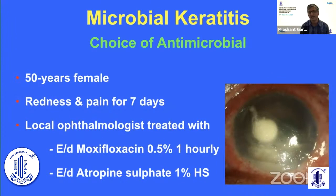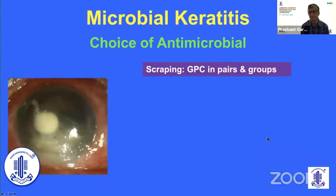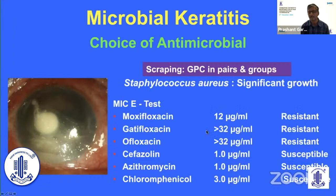Let me show you a third patient — a 50-year-old female who presented with seven-day symptoms. She was being treated with moxifloxacin 0.5% every one hour and atropine sulfate once a day, but despite this treatment her condition deteriorated. When she presented to us, we started treatment based on microbiology. The microbiology revealed gram-positive cocci in pairs, identified as Staph aureus, which was resistant to moxifloxacin but susceptible to cefazolin. Therefore, it was obvious to pick cefazolin as the antibiotic of choice.